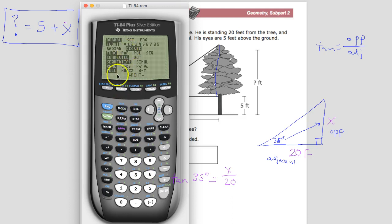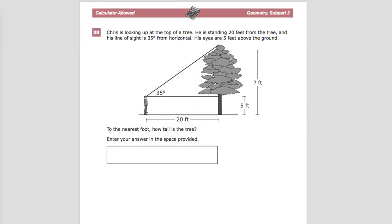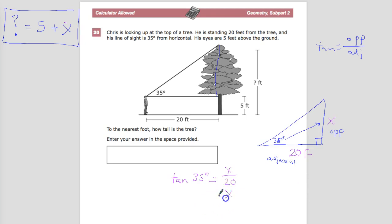So now I'm in degree mode. See, right there. Now I can do tangent of 35 and close that off and I'm going to multiply it by 20 to find my value of x to be 14. So x is equal to 14 and that would be in feet.